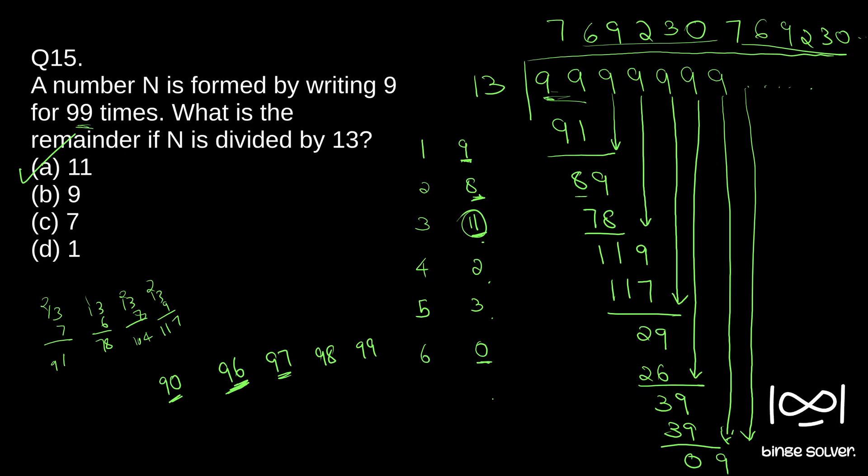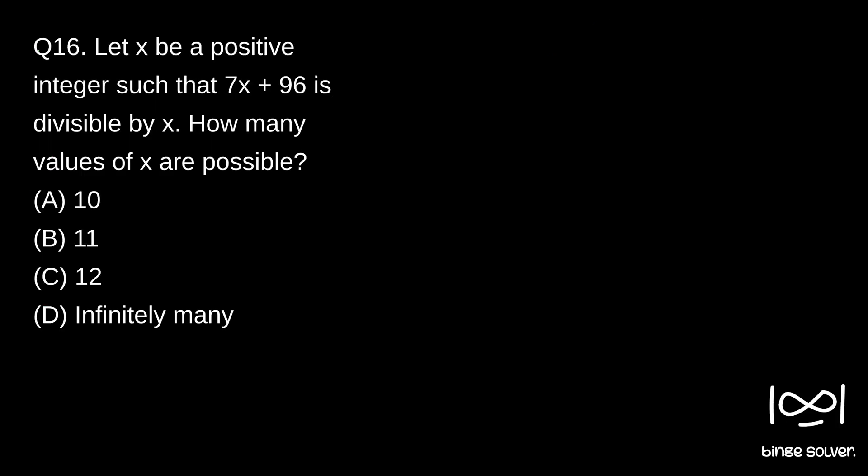Next question, question 16. Let x be a positive integer such that 7x plus 96 is divisible by x. How many values of x are possible?